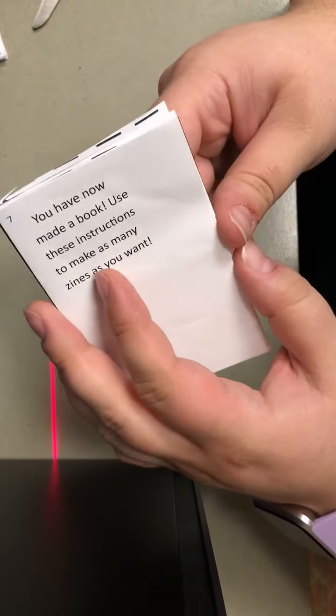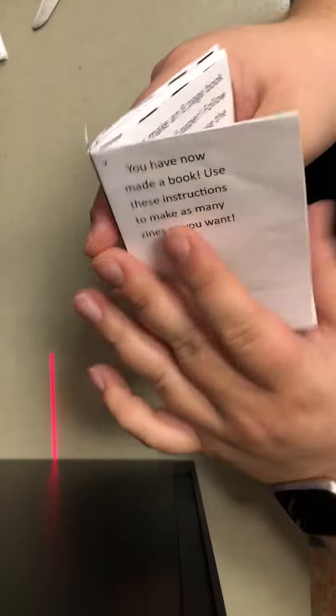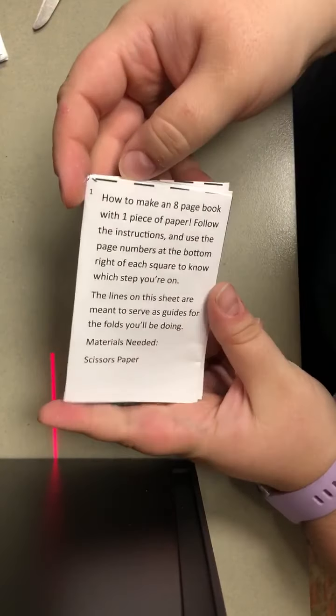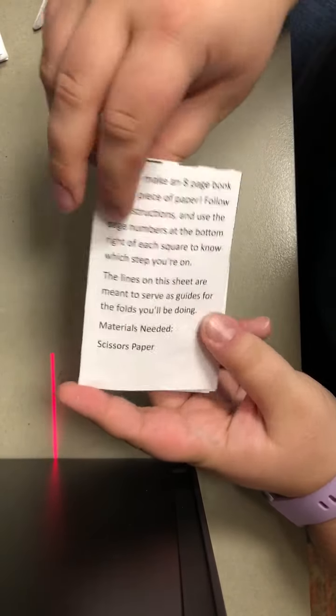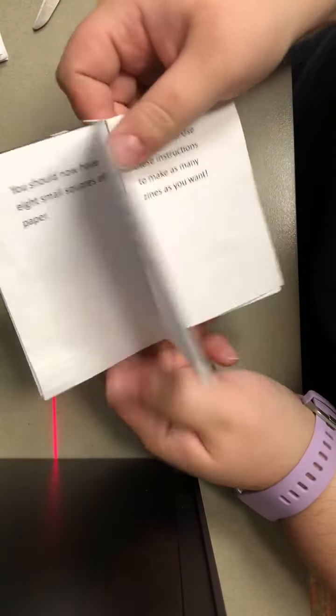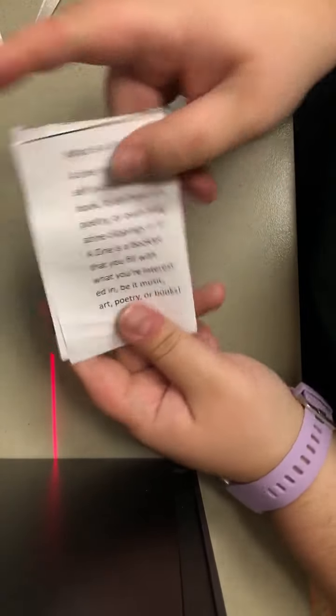So you can use these instructions to make a zine as many times as you'd like. And here it is. And on your instructions, you'll notice that they're all numbered. So if you made it right, it's going to say one, two, three, four, five, six, seven, done.